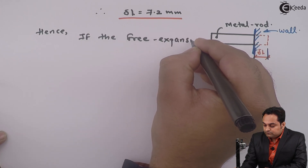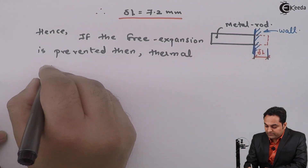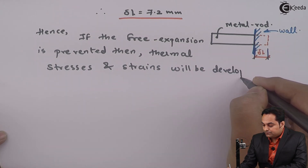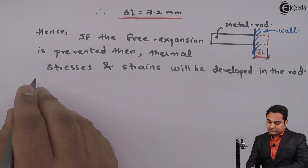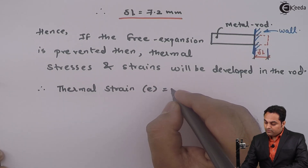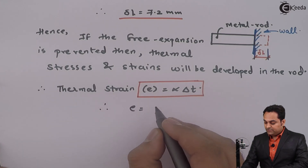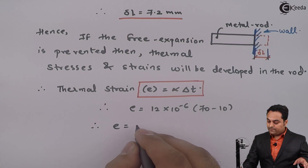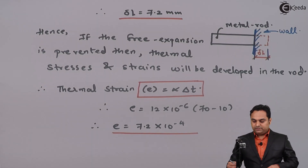Hence, if the free expansion is prevented, thermal stresses and strains will be developed in the rod. Therefore, thermal strain equals alpha into delta T, which is 12×10⁻⁶ multiplied by (70 minus 10). The thermal strain answer is 7.2×10⁻⁴.